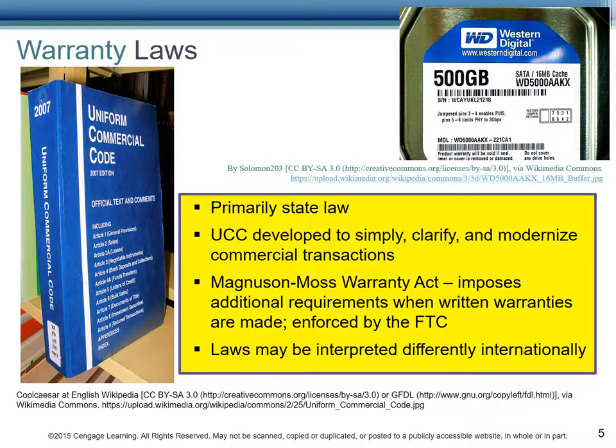Let's take a look at this Western Digital 500-gigabyte hard drive label. The identifying information will help Western Digital determine if your product is still eligible for warranty. However, Western Digital says that the product warranty will be void if the seal, label, or cover is removed or damaged. This protects them from liability for damage caused by label removal, and it also protects you in that the company has a record of the type of product you own, when you bought it, and what warranties apply.